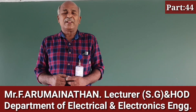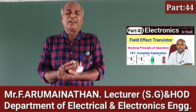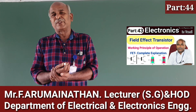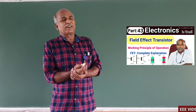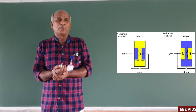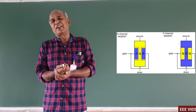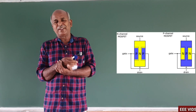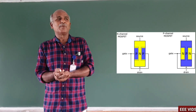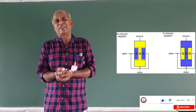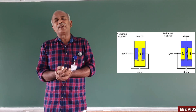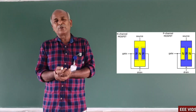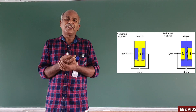This class is called Field Effect Transistor. In the field effect transistor, we have a bar-type material — either an n-type bar or a p-type bar. In the bar-type material, we have an n-type material.